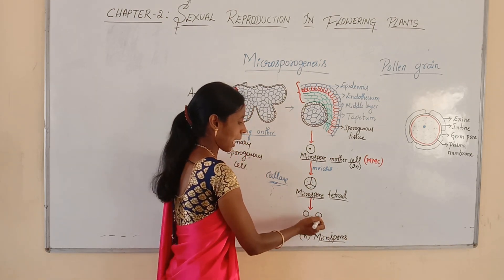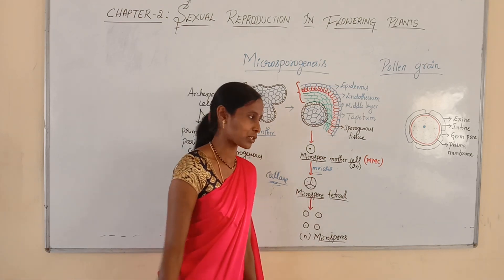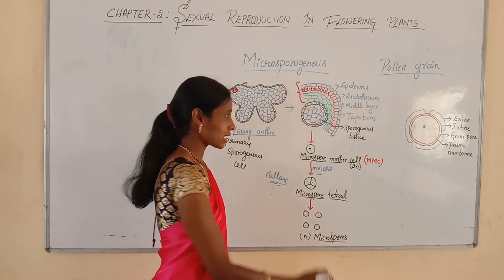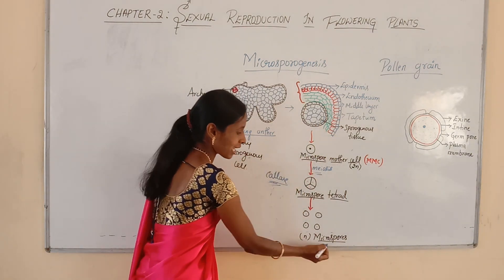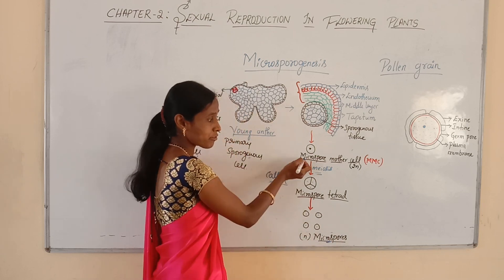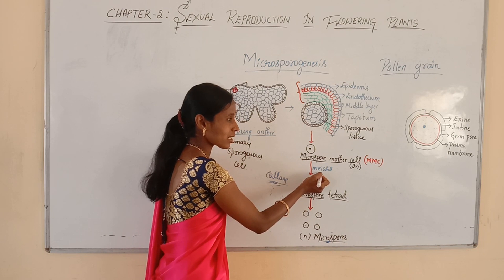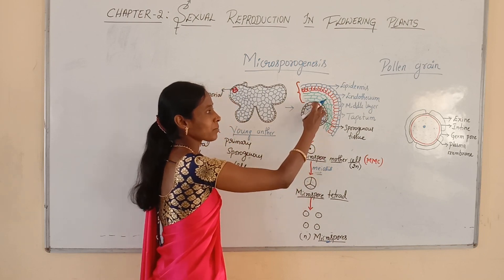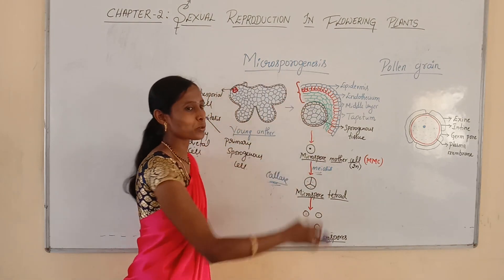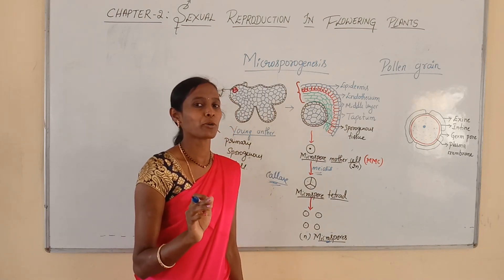After the formation of microspore tetrads, the tapetum produces callase enzyme. That callase enzyme dissolves the callose present between the microspores so that all four microspores get separated. The four haploid microspores are formed by the meiotic cell division that takes place in the microspore mother cell — this process is called microsporogenesis.